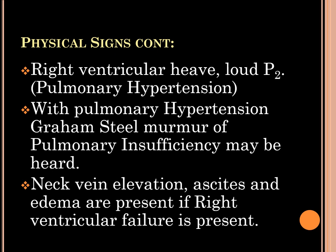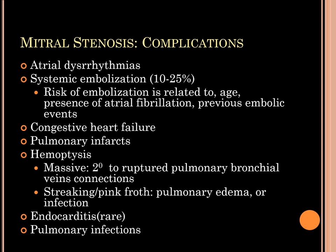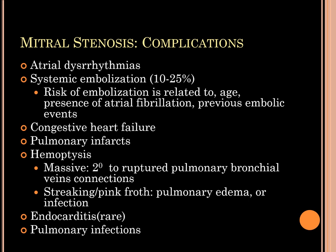Signs and symptoms of right heart failure with pulmonary hypertension will be present. Complications include: atrial fibrillation leading to thrombi and embolization; heart failure signs and symptoms; and pulmonary infarcts and hemoptysis if there is increased pressure in the pulmonary veins.